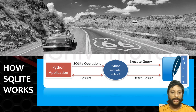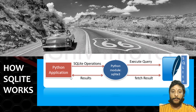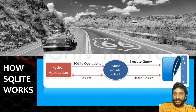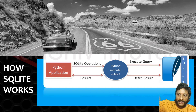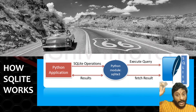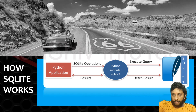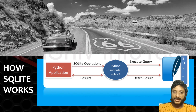You have a SELECT * FROM table fetching data from the SQLite database. The application is here, my database is there, and there is an intermediate module between the application and the database. Sending the query to the Python module, from there it goes to the database, the database processes the data and gives it back. This is how the overall functionality works.